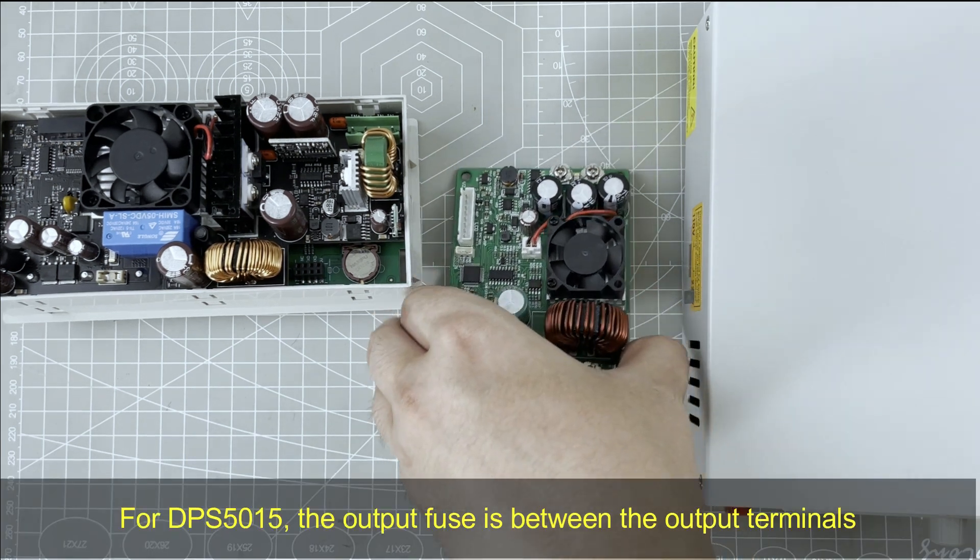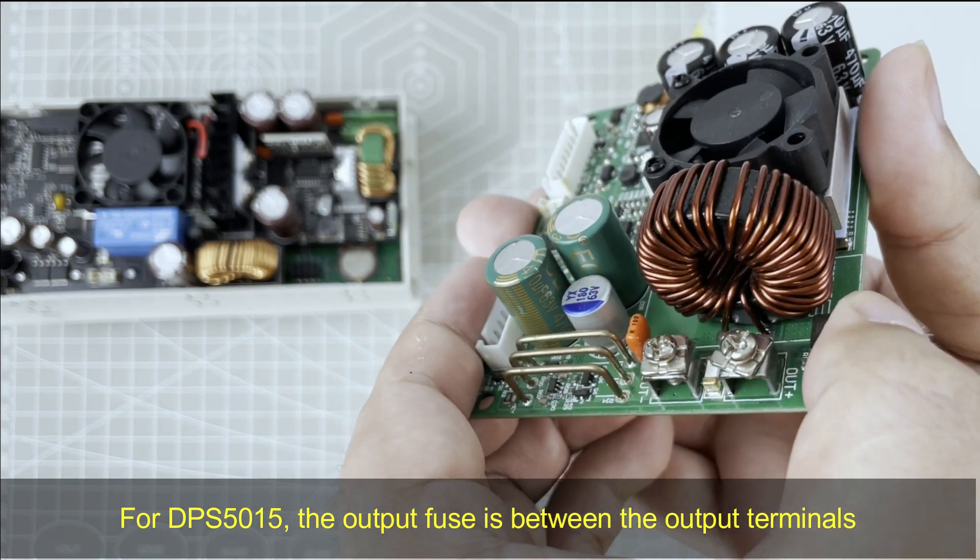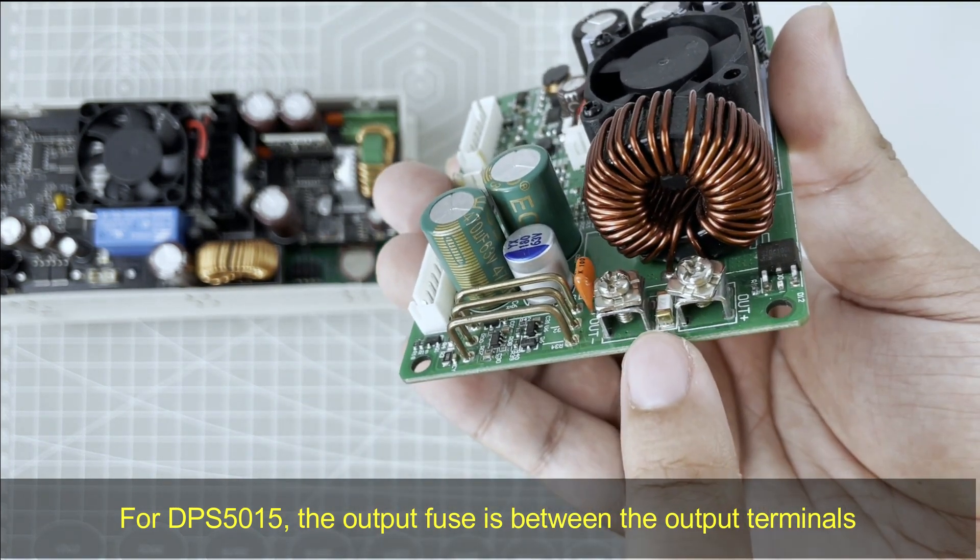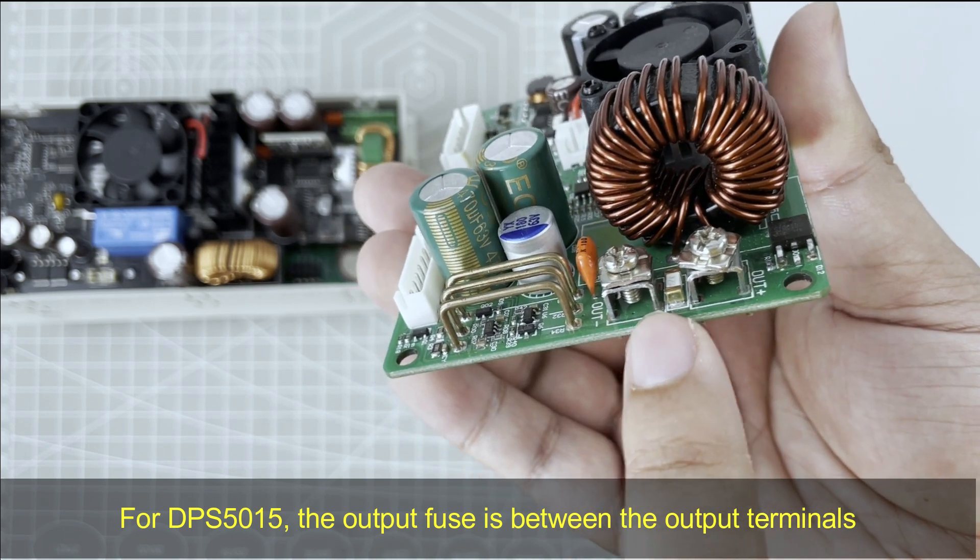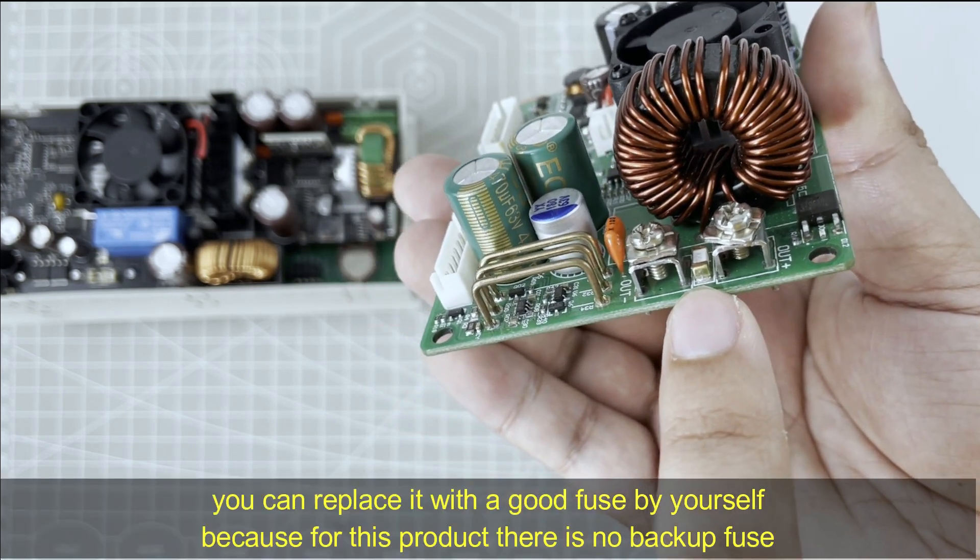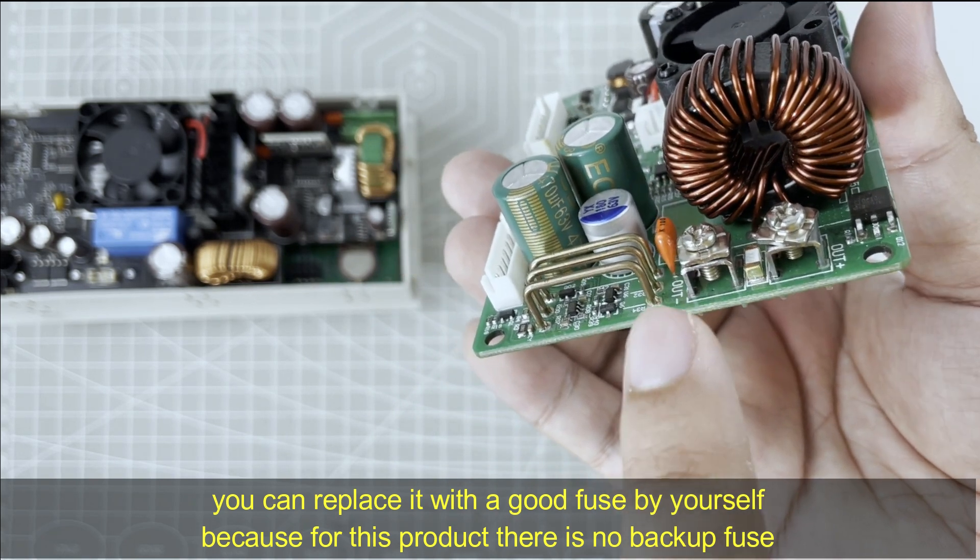For DPS series power supply, this is DPS 5015. The output fuse is between the terminals. So you can replace it to see if the device works.